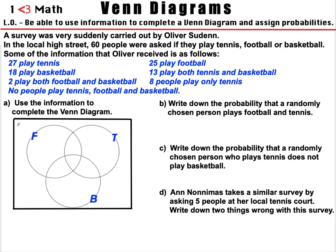Part A: use the information to complete the Venn diagram. Part B: write down the probability that a randomly chosen person plays football and tennis. Part C: write down the probability that a randomly chosen person who plays tennis does not play basketball. Part D: Ann Anonymous takes a similar survey by asking five people at her local tennis court — write down two things wrong with this survey. Please pause the video now if you'd like to have a go before I go through the explanations and solutions.